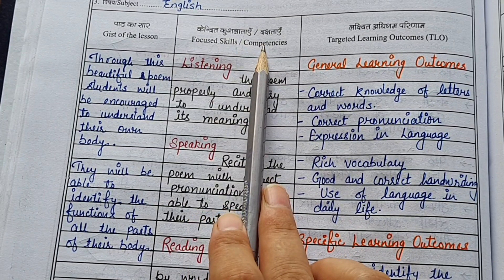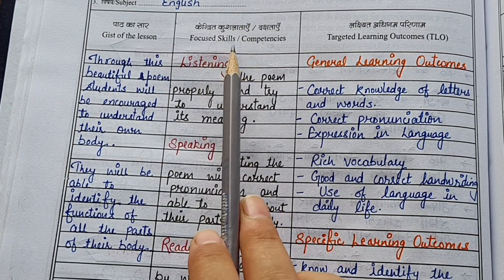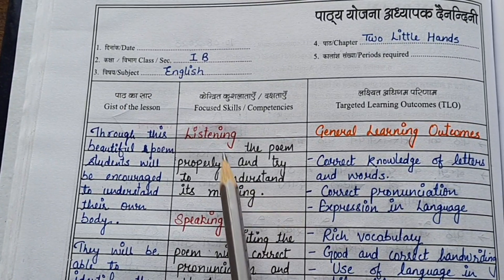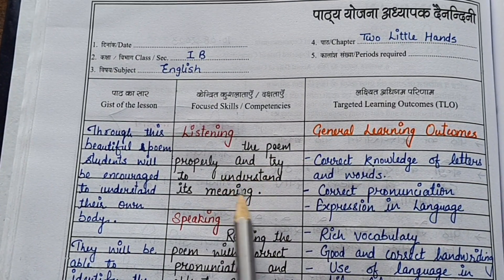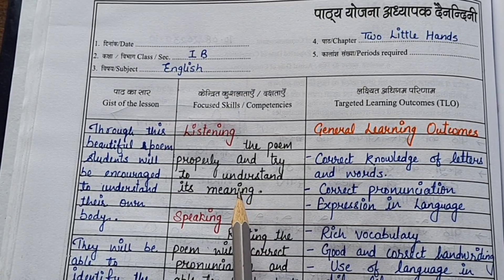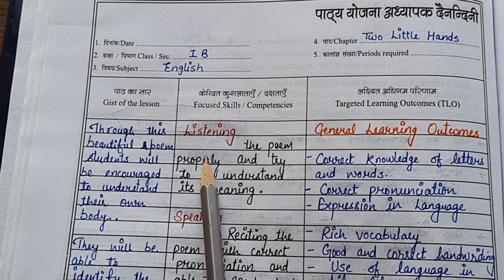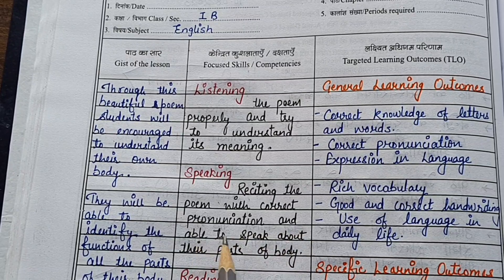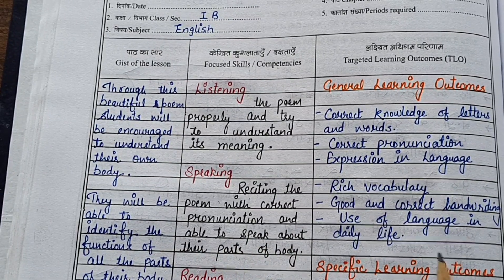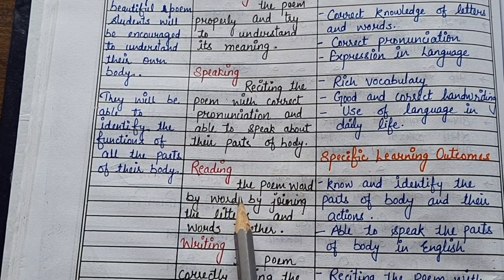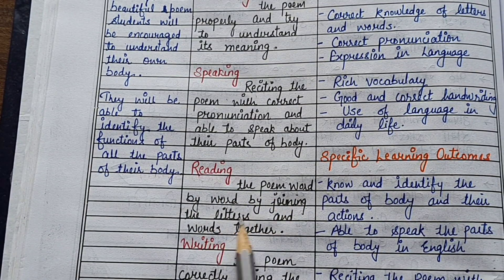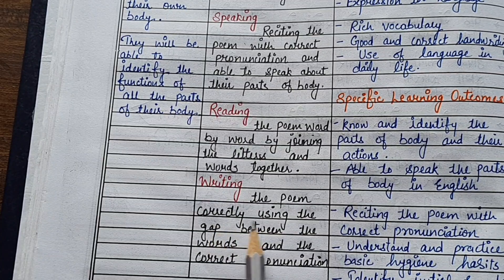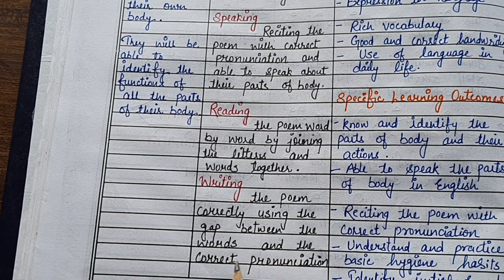Now we are talking about competencies. In Hindi and English we follow the same competencies: listening, speaking, reading, and writing. For listening, students must listen to the poem properly and try to understand its meaning — only when they understand the meaning can we say they are achieving this competency. For speaking, reciting the poem with correct pronunciation and being able to speak about the parts of the body. For reading, reading the poem word by word by joining the letters and words together. For writing, writing the poem correctly using proper gaps between words and correct punctuation.